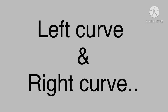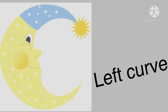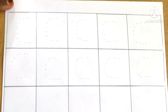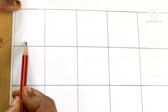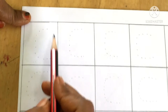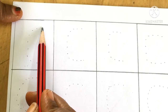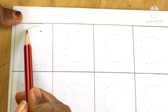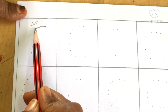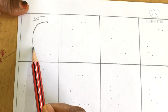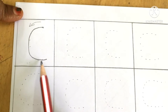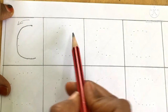Now we are going to learn about left curve and right curve. This is the example for left curve, and this is the example for right curve. Shall we practice? This is left curve and the dots are clear. On the dots, make sure you drop the mallet. Start from the top and come down.